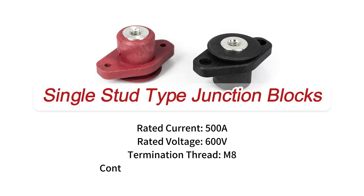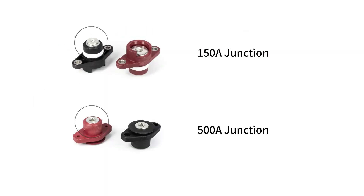Next is the High Current 500A Copper Junction Block. You can see that the 150A and 500A differ not only in current rating, but there is also a little difference in appearance.